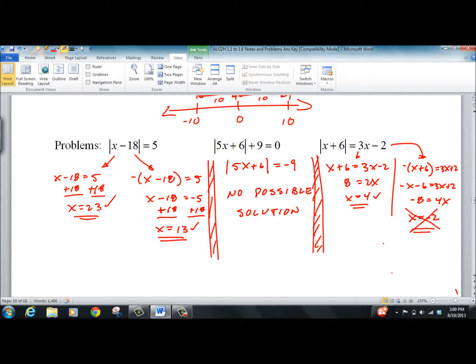Negative 2 plus 6 is 4. Negative 6 minus 2 is negative 8. This one doesn't work. So do you have to check? Yeah, every time. Especially with the absolute value. Sometimes they don't work. Seems odd. I would think it would work. But it doesn't. Can't be negative.